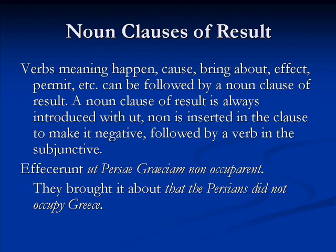The next noun clause we're going to learn about is a noun clause of result. Some clauses of result are also the equivalent of nouns. Verbs meaning happen, like accidit, cause, bring about, effect, like efficio, or permit, like permitto, are generally followed by a result clause introduced by ut with the verb in the subjunctive.